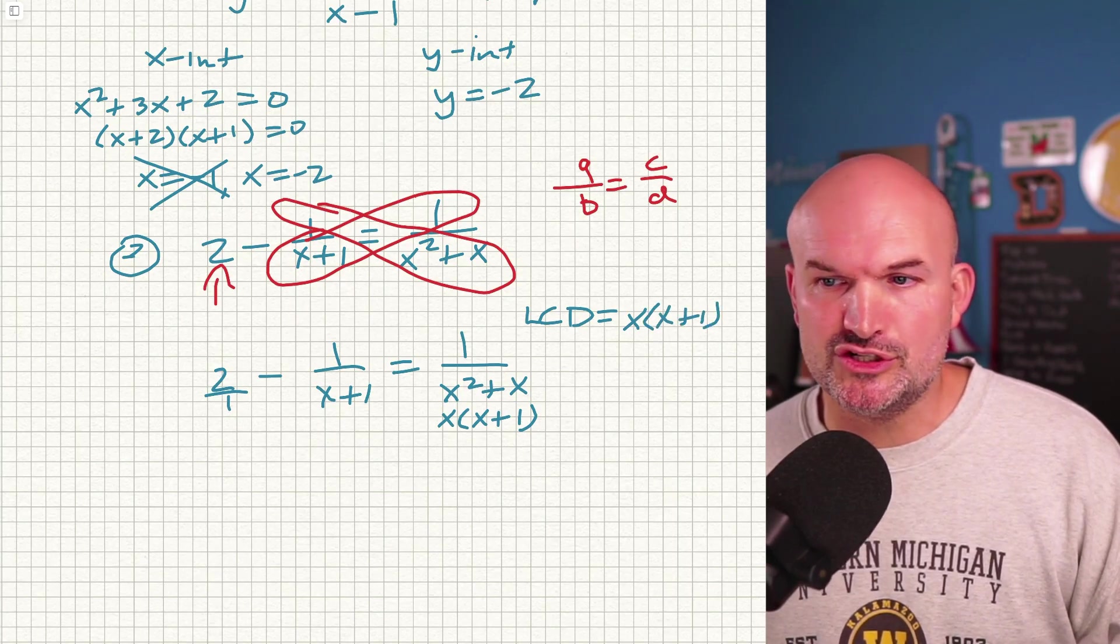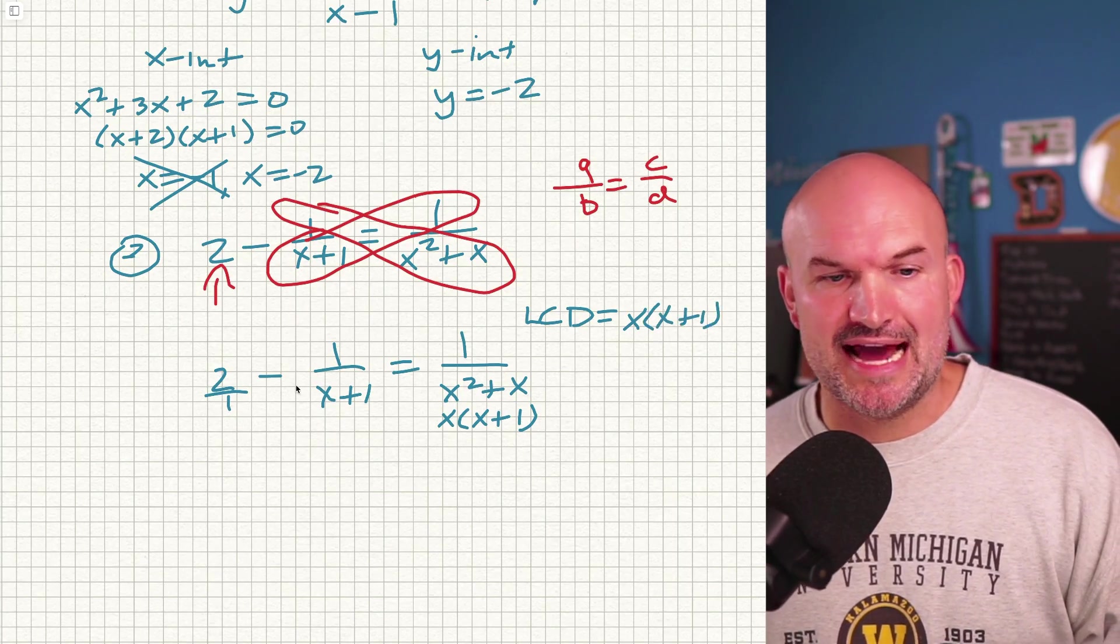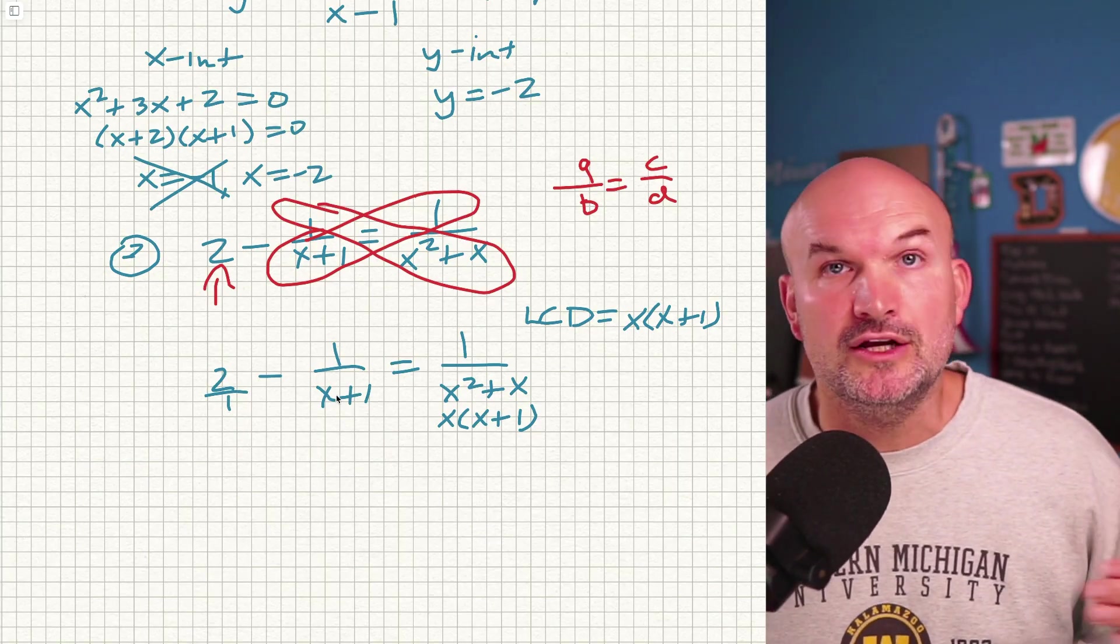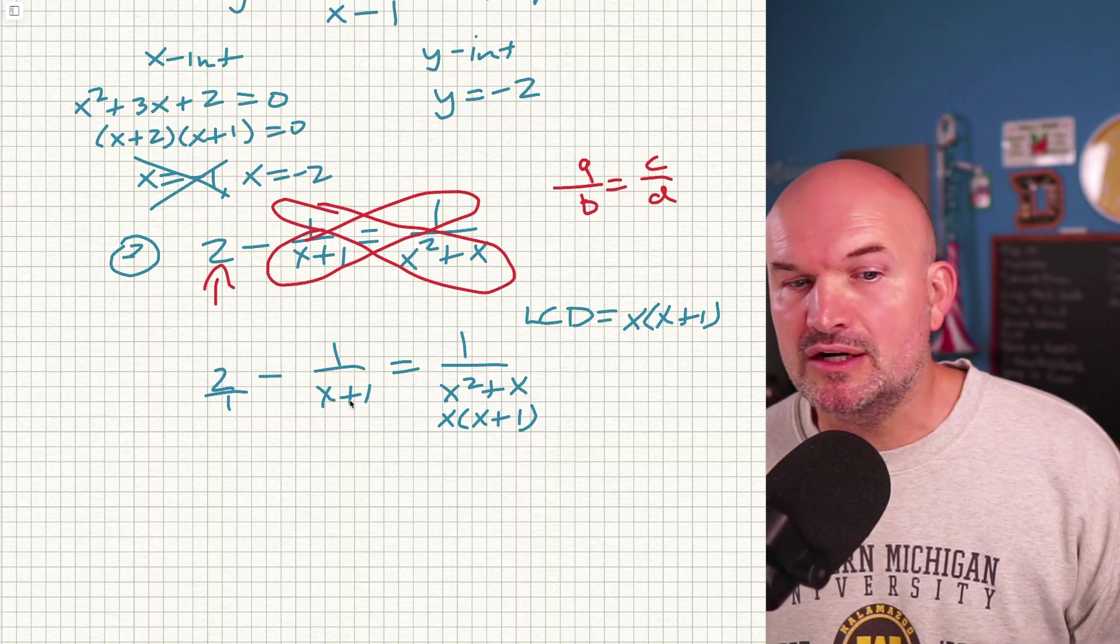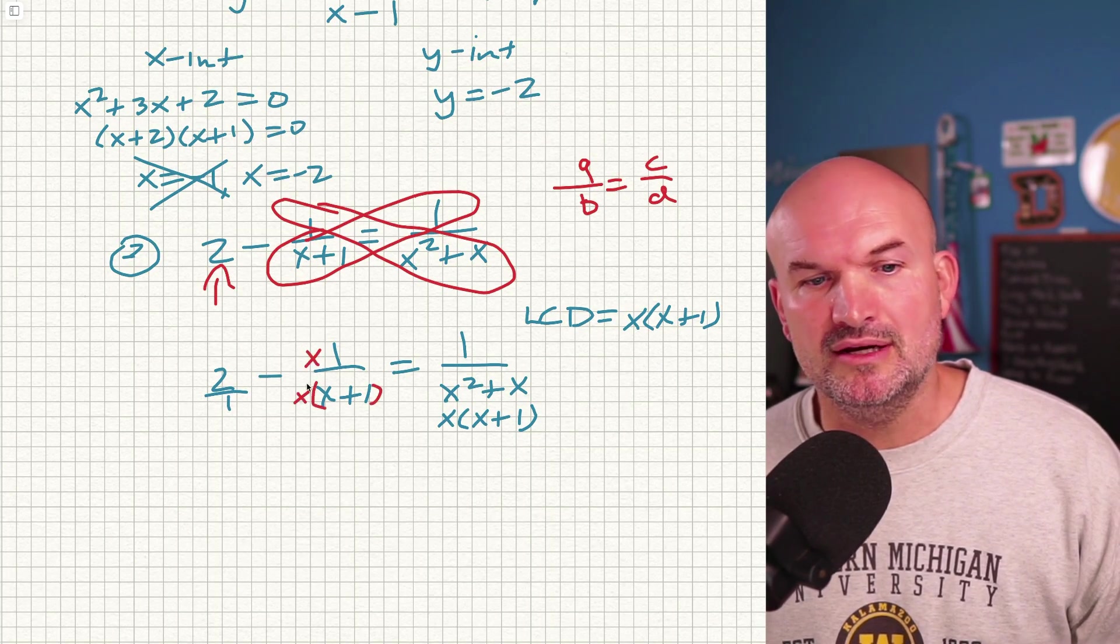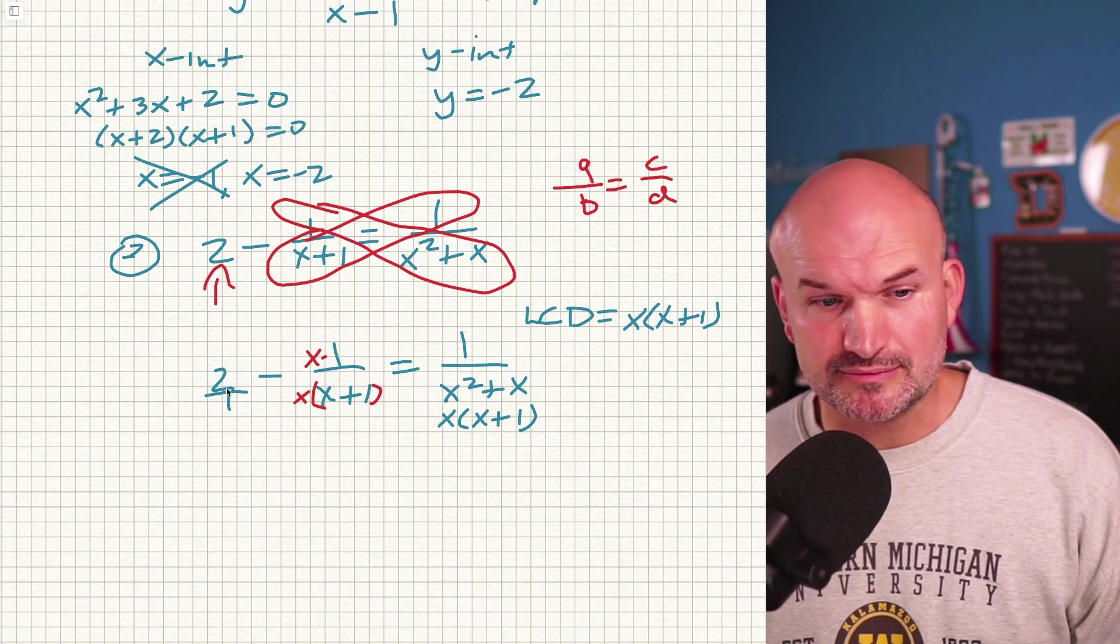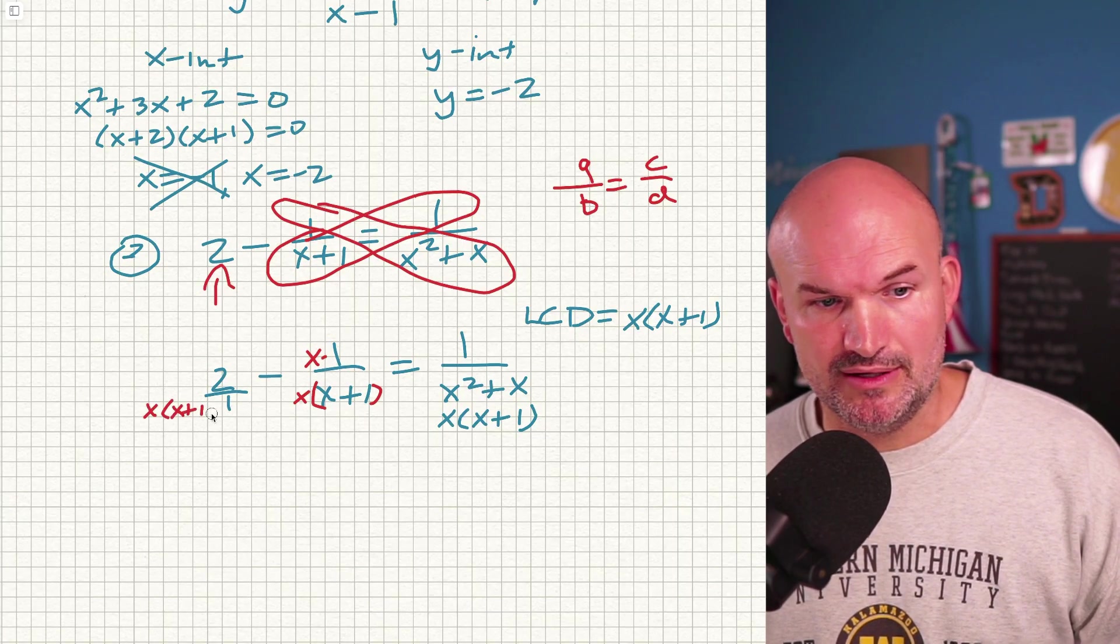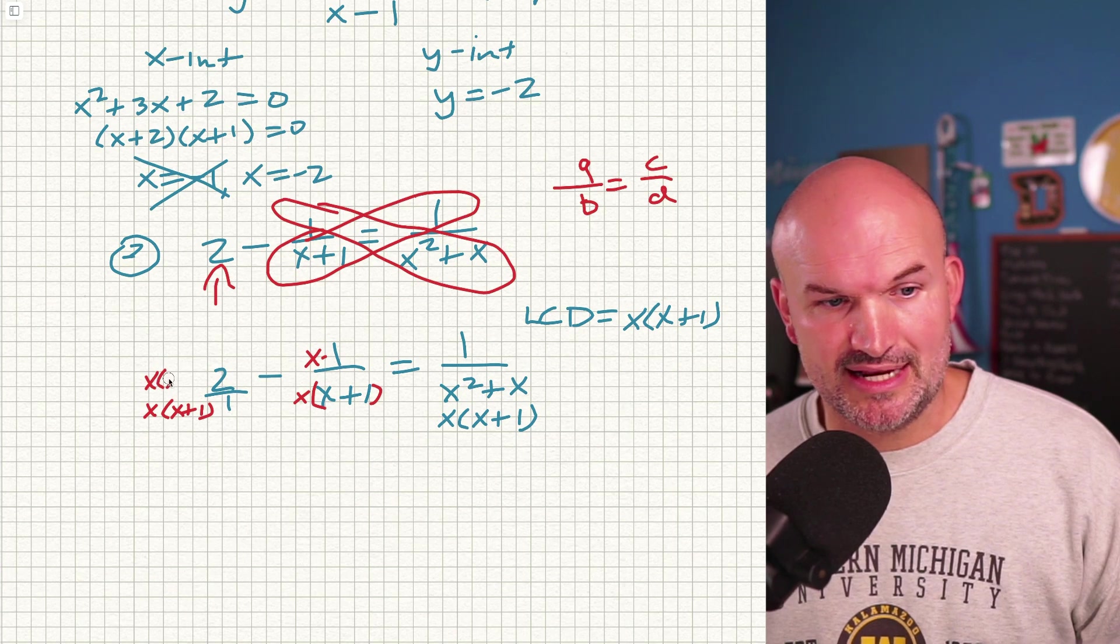So what I'm going to do is I'm just going to create that denominator for each of one of mine. Now, remember to create equivalent fractions, whatever you do in the denominator, you have to do in the numerator. So over here, I already have an X plus one. So I'm just going to multiply by an X, whatever you do in the denominator, make sure you do in the numerator. And then over here, I don't have anything. So I'm going to multiply that times an X plus one, and then X times an X plus one.